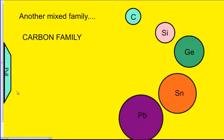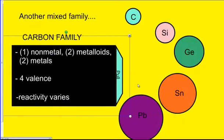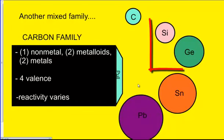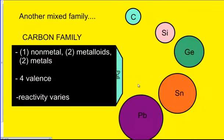A couple characteristics about this unique family. It's under the carbon element. It's group number 14, but often you'll hear me refer to it as four because it has four valence. The carbon family has one non-metal, which is carbon. It has two metalloids, which is silicon and germanium. And it has two metals, which is tin and lead.